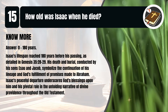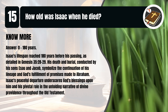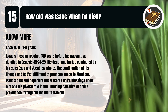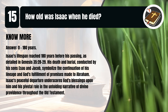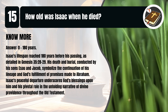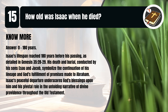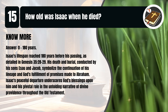That's D. One hundred and eighty years. Isaac's lifespan reached one hundred and eighty years before his passing, as detailed in Genesis, chapter 35, verses 28 to 29. His death and burial, conducted by his sons Esau and Jacob, symbolize the continuation of his lineage and God's fulfillment of promises made to Abraham. Isaac's peaceful departure underscores God's blessings upon him and his pivotal role in the unfolding narrative of divine providence throughout the Old Testament.